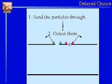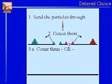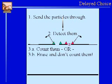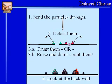Are you ready? This setup is designed to test whether it's going to change the result when we look at it, depending on whether we arbitrarily choose to count them — so we will know which slit they went through — or choose to erase it. And then look at the back wall. So we can either choose to know which slit they went through or choose not to know which slit they went through at the time we look at the back wall.